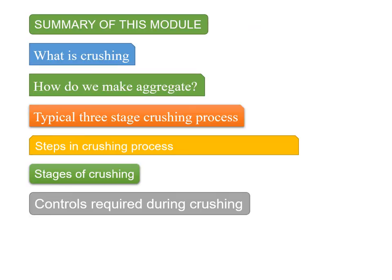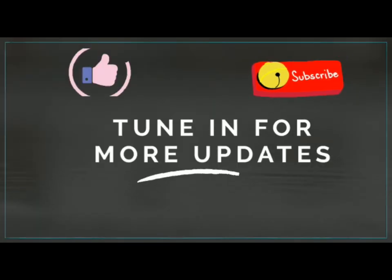To summarize this module: we talked about what crushing is, how to make aggregates out of boulders, the three-stage crushing process, the steps in the crushing process, the different stages of crushing, and the controls required during crushing operation to optimize production and minimize wastages. Thank you very much for watching — do tune in for more updates.